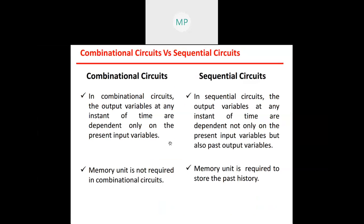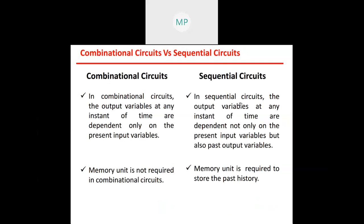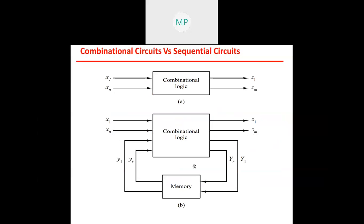The difference between combinational and sequential logic circuits: in a combinational circuit, output variables at any instant depend only on the present input variables, and no memory unit is required. In a sequential circuit, output also depends on past output variables, and a memory unit is required to store the past history — so a memory element is present in sequential circuits.